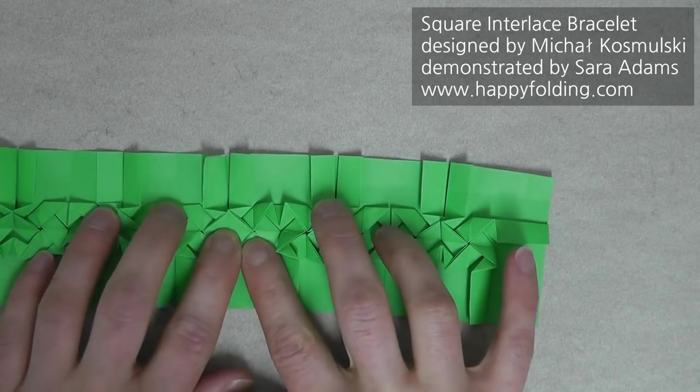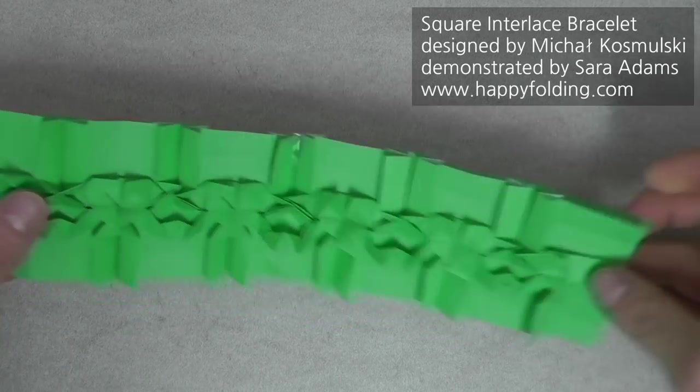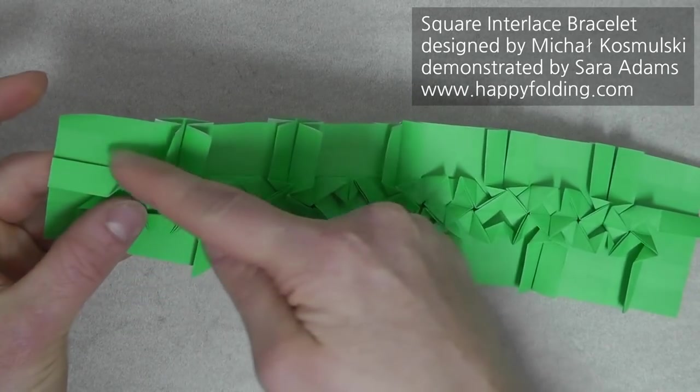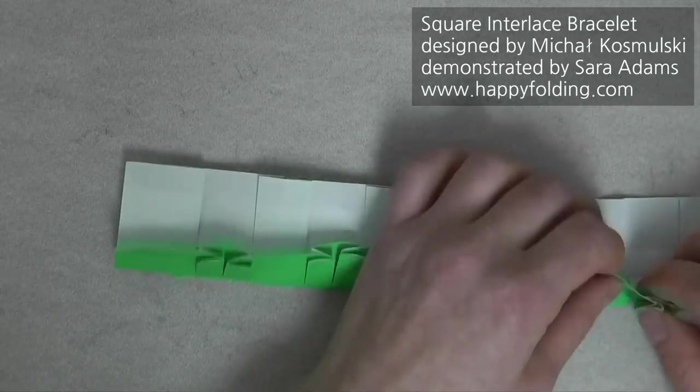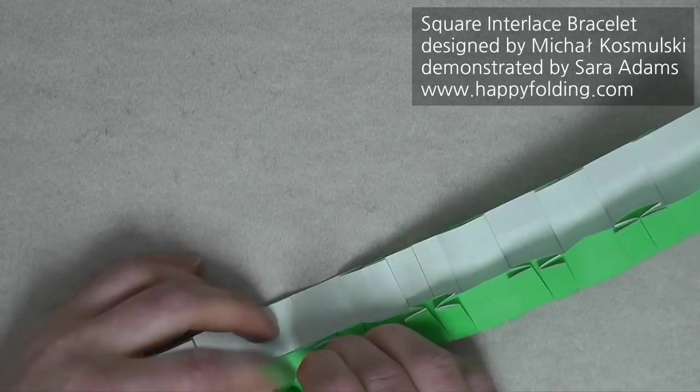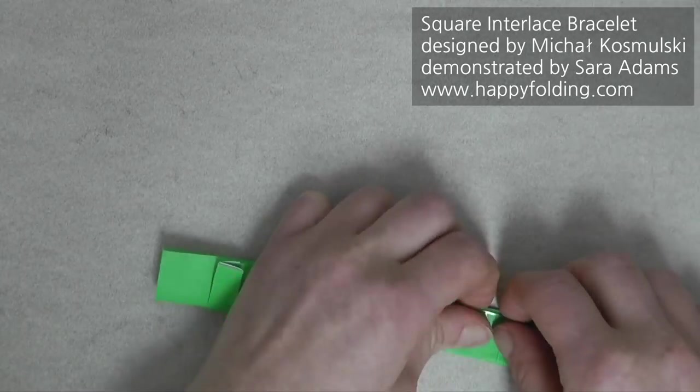Now, once you've collapsed all of the molecules, we're then going to make a mountain fold all along this length, make a strong crease, and same on the other side.